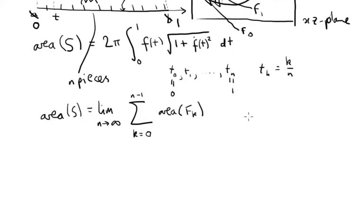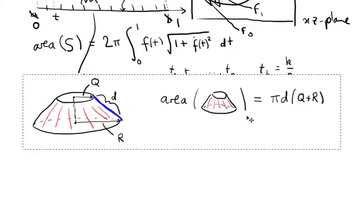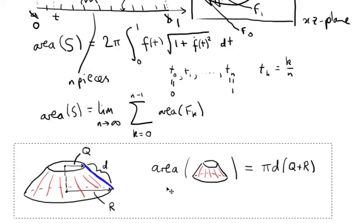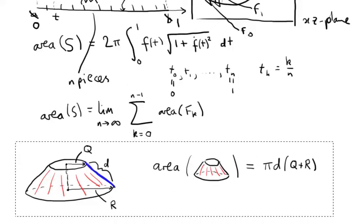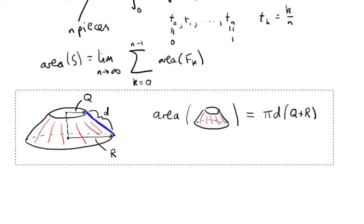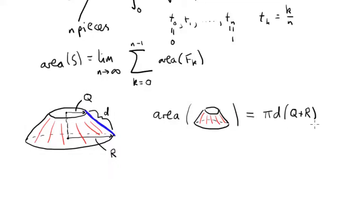Okay, I'm now going to recall a formula for the area of a frustum that I proved in an earlier video. So if the frustum connects a circle of radius q and a circle of radius r, and the distance along the surface of the frustum between those two circles is d, then the area is given by this formula, π times d times q plus r.